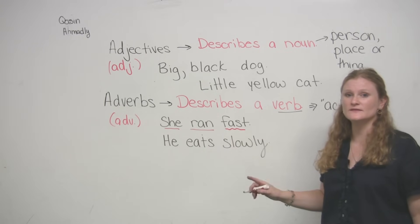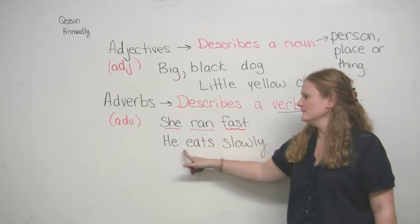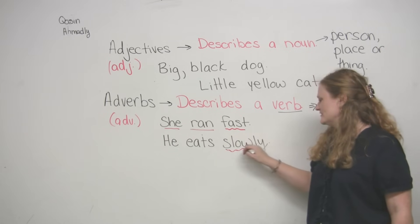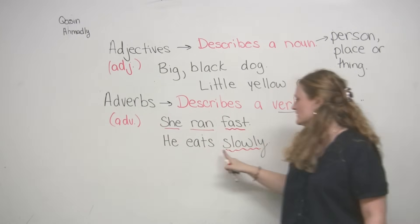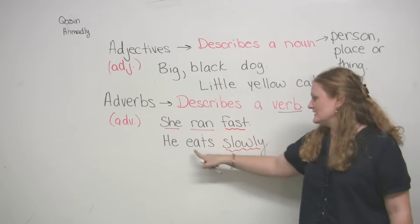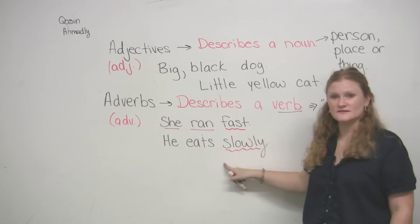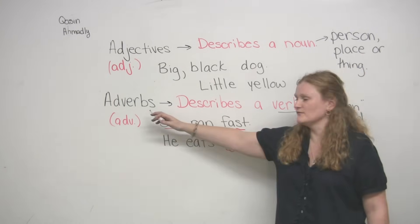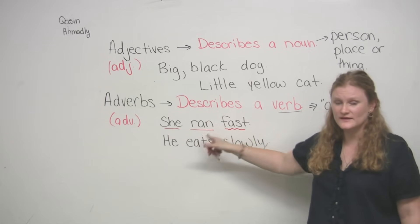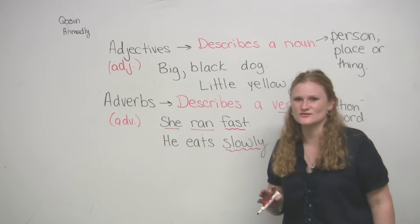Let's look at this sentence. Can you tell me where the adverb is? He eats slowly. 'Slowly' is the adverb in this sentence. It tells me how the subject does the action. How does he eat? He eats very slowly. So if you can remember that the adverb describes a verb — or describes how the action is done — you're going to be a lot better off in English grammar.